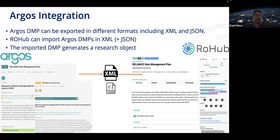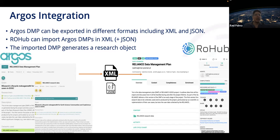Now let's go into more details of the integration with Argos. Argos can export DMPs in different formats, including XML and JSON — these are some of the potential export formats for data management plans. Rohub can now import those DMPs, particularly based on the XML version, but the JSON version can also be imported. This import generates a research object in Rohub. Here is a data management plan in Argos, and based on this import process, we have generated a research object which includes all of the information about the data management plan.